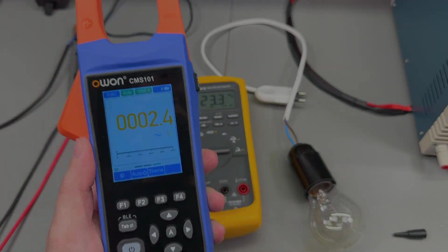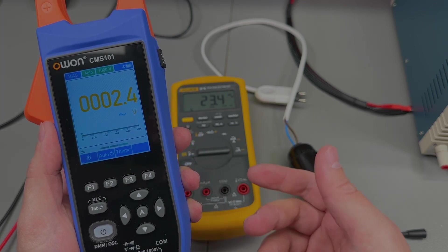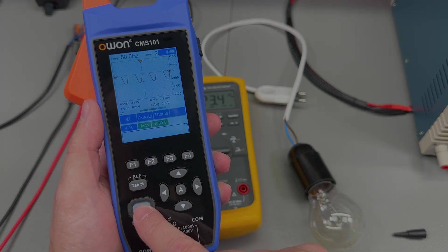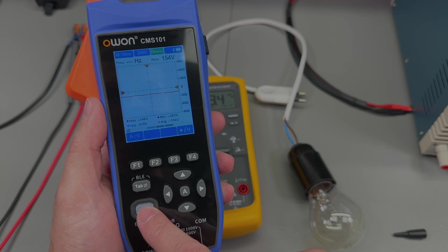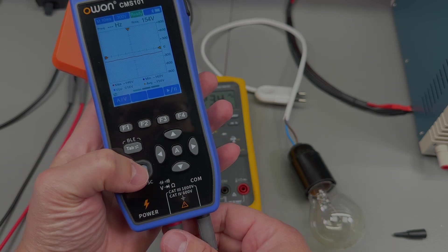And it seems that it gets into this bad state whenever you switch between multimeter mode and oscilloscope mode while being already connected to voltage, to mains voltage in my case.